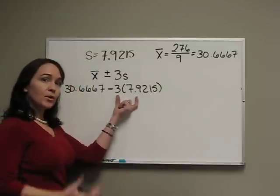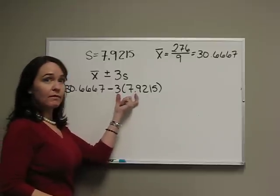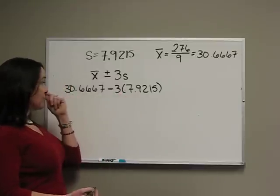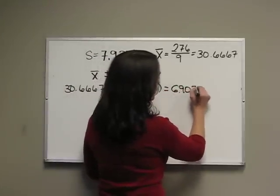We always multiply before we add and subtract. Multiply the three times 7.9215, then subtract it from 30.6667, and you should get 6.9022.